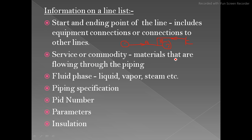The line list also includes service or commodity — the material flowing through the piping. It also gives you fluid phase, such as liquid, vapor, or steam — whatever phase is running in the pipe. Pipe specification is also mentioned in the line list, along with P&ID numbers, parameters, and insulation.